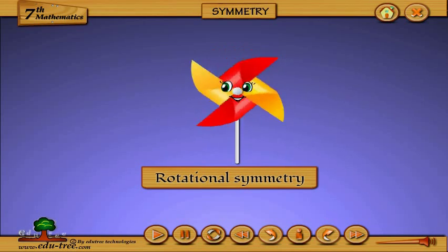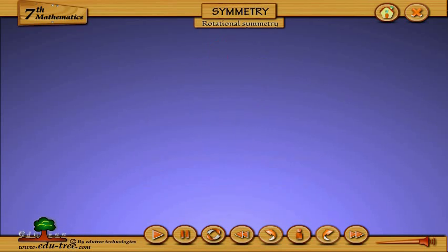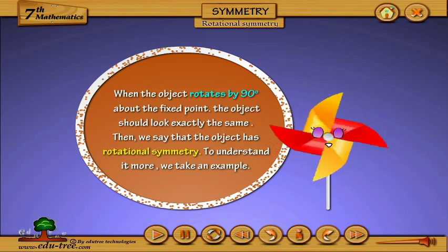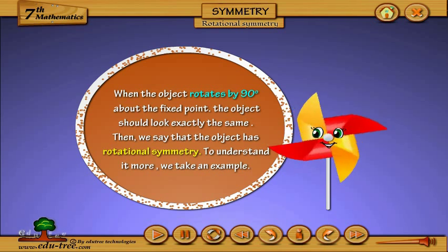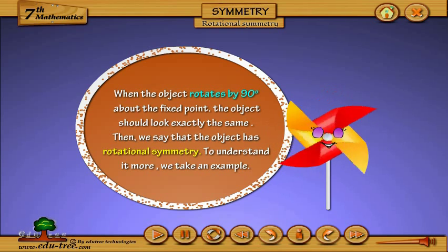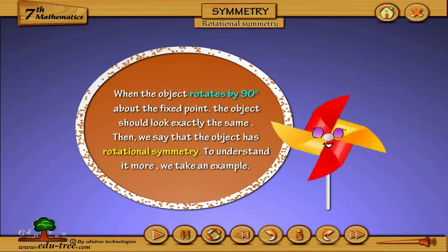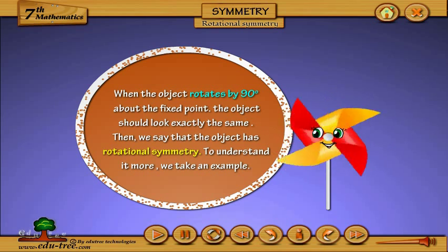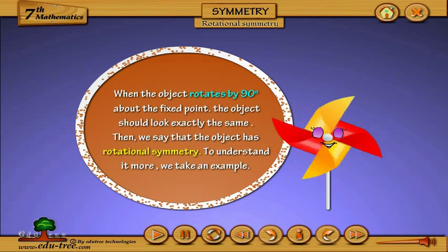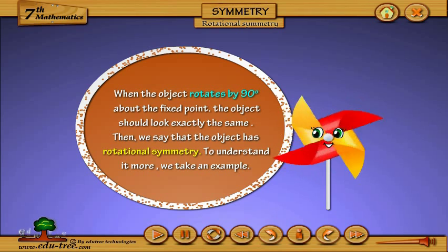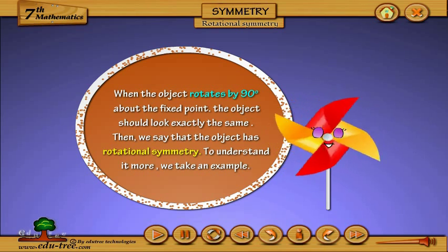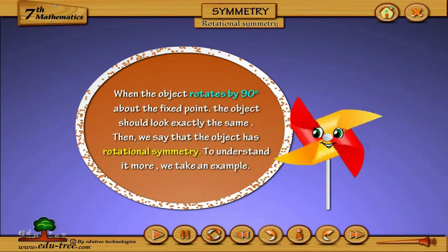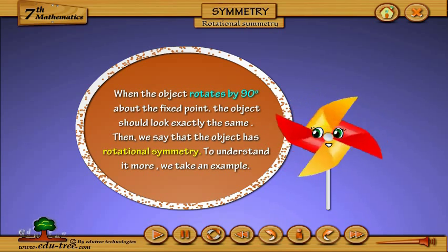Rotational symmetry: when an object rotates by 90 degrees about a fixed point and the object looks exactly the same, we say that the object has rotational symmetry.